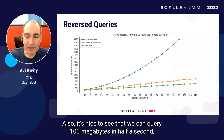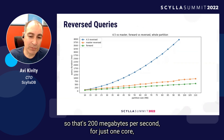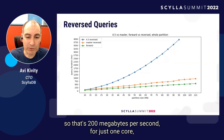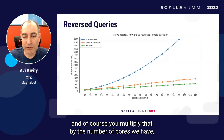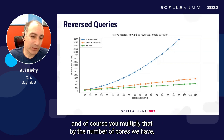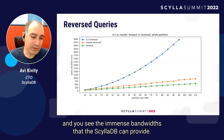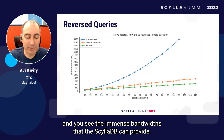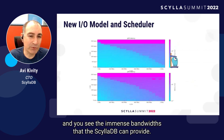It's nice to see that we can query 100 megabytes in half a second — that's 200 megabytes per second for just one core. Multiply that by the number of cores we have, and you see the immense bandwidth that ScyllaDB can provide.